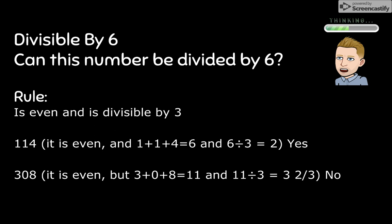To work that out, let's sum the digits of 114 together. So 1 plus 1 plus 4 equals 6. And 6 divided by 3 equals 2. 114 is divisible by 3. And it is an even number. So 114 can be divided by 6, with the answer being a whole number.